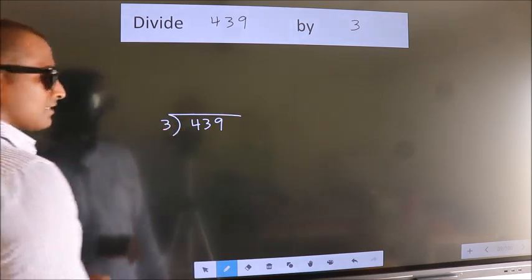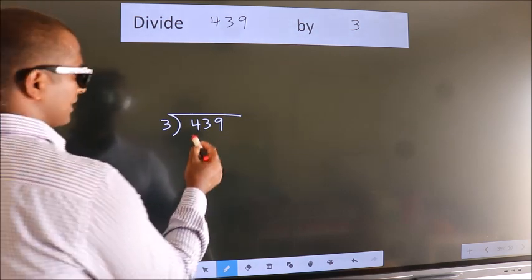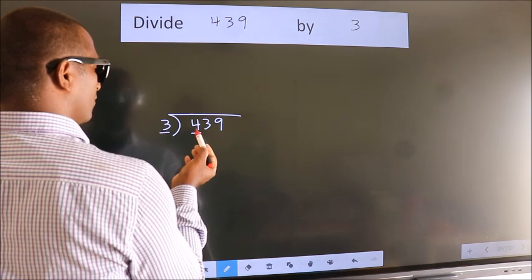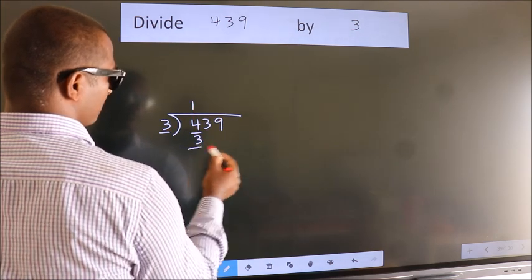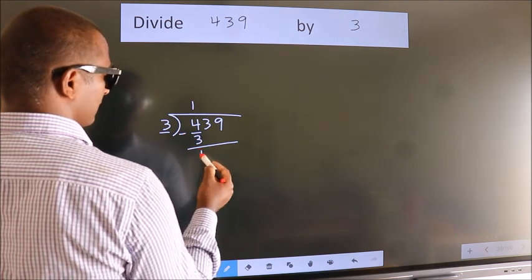This is your step 1. Next, here we have 4, here 3. A number close to 4 in 3 table is 3 once 3. Now we should subtract. We get 1.